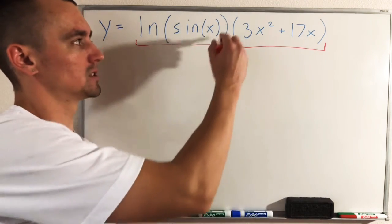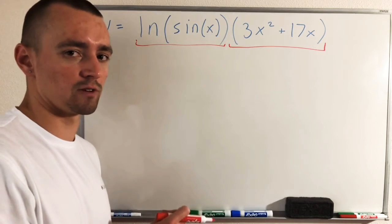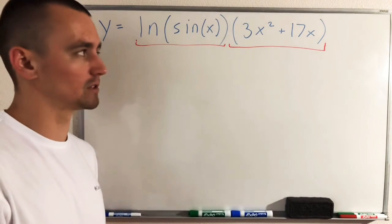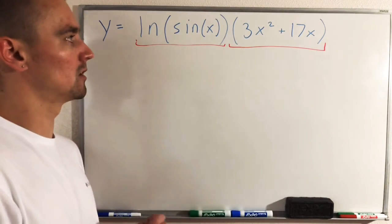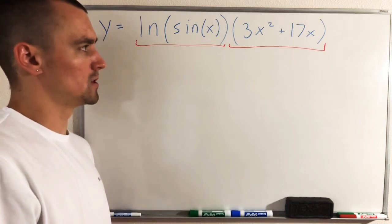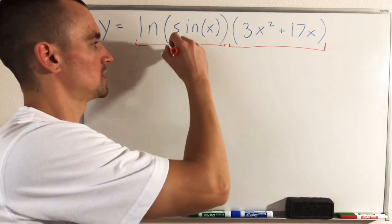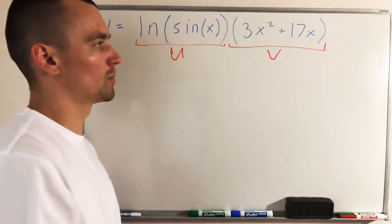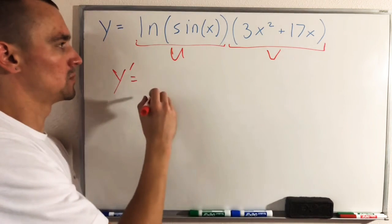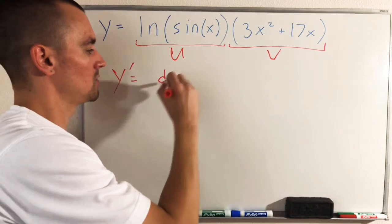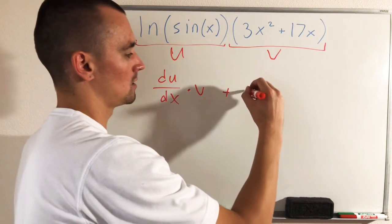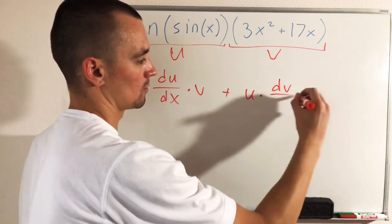Since the multiplication is the last thing we would do when simply plugging in an x value, that's the first breakdown we need to deal with when finding the derivative of the whole function. So since we're dealing with the product of the left piece times the right piece, we're going to use the product rule first. Let's call the left piece u and the right piece v and apply the product rule.